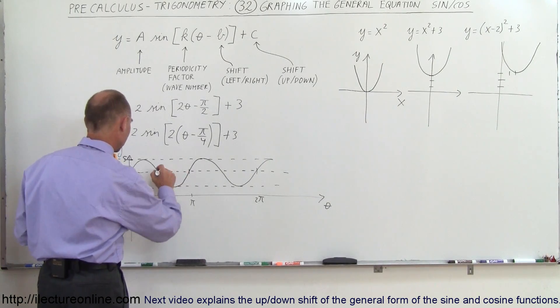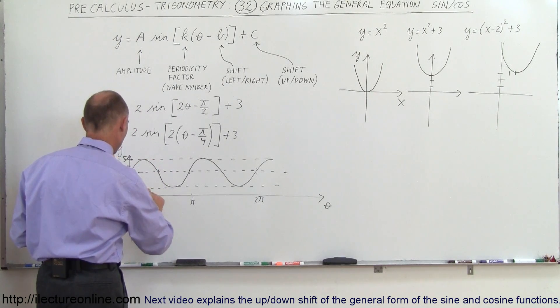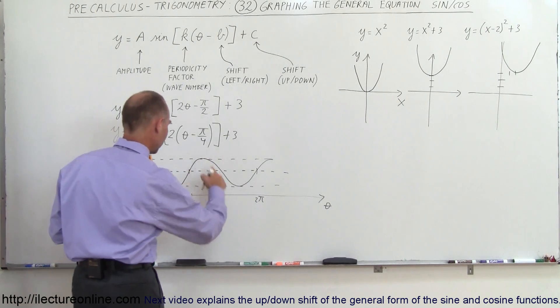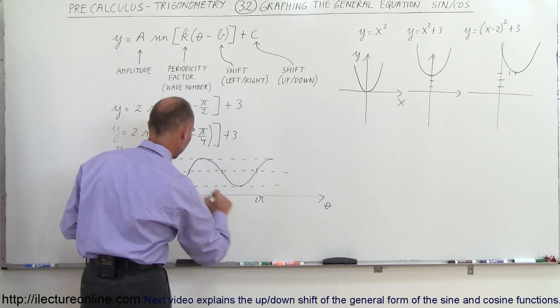So if this is π, then this would be π over 2, and this here would be π over 4, and of course then this here would be 3π over 2, and so forth.